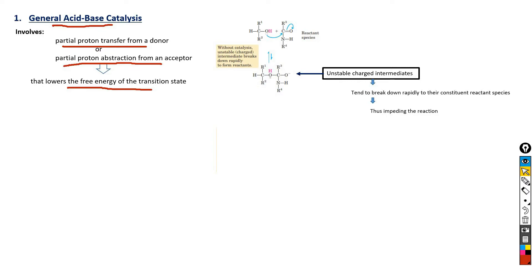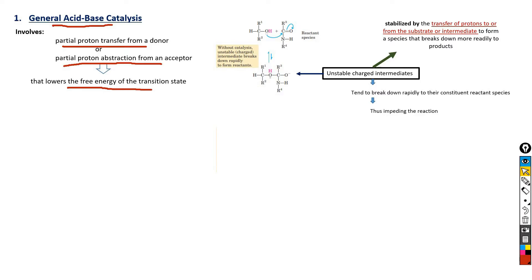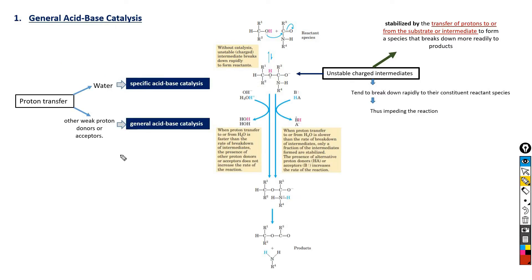The question is how charged intermediates are stabilized during biochemical reactions. They are stabilized by the transfer of protons to or from the substrate or intermediate to form a species that breaks down more readily to products. For non-enzymatic reactions, proton transfer can involve either water alone or other weak proton donors or acceptors. Catalysis that uses only H+ or OH- present in water is referred to as specific acid-base catalysis. If protons are transferred between intermediates and water faster than the intermediate breakdown to reactants, the intermediate is effectively stabilized every time it forms, as you can see here.